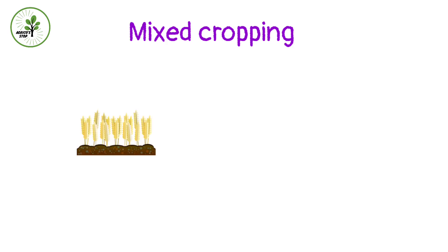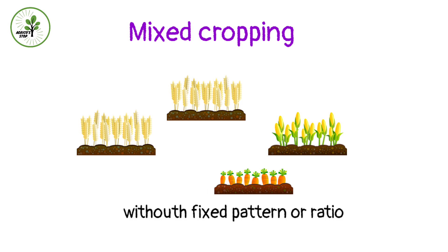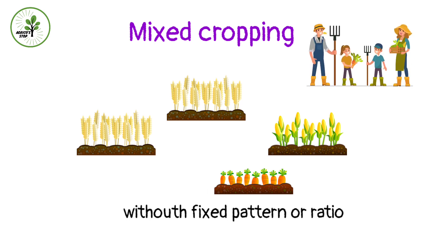The next multiple cropping system is mixed cropping — the cultivation of two or more crops simultaneously on the same land without a fixed pattern or ratio. This is commonly followed in dryland regions of India. The main objective is subsistence — to lessen the risk of crop failures and to satisfy the farmer's family with food and fodder. Scientific research on mixed cropping was first done by La Fidze in 1928.